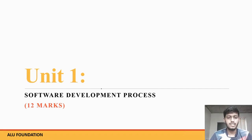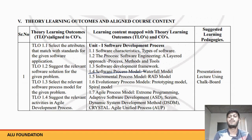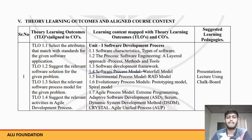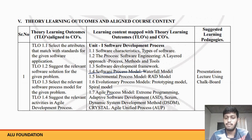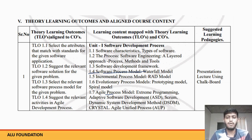Hello friends, welcome to this video. In this video we will see Unit Number One: Software Development Process. Today's video we are going to understand 1.4, that is the software process model, and in that we will understand the waterfall model. The software process models include the RAD model, Prototyping model, Spiral model, and Agile model. In this video we will understand the waterfall model.